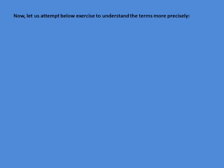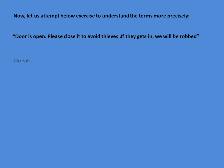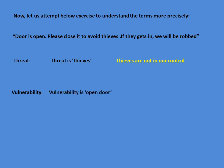Let us attempt an exercise to understand the terms more precisely. Statement: 'The door is open, please close it to avoid thieves. If they get in, we will be robbed.' Here, the threat is thieves — they are not in our control, being an external factor. The vulnerability is the open door — we can control it by closing the door. The risk is that when thieves and an open door are in the same place, there is always a risk of robbery.